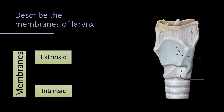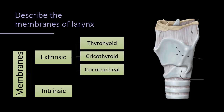Membranes of the larynx are of two varieties — extrinsic and intrinsic. Extrinsic membranes are seen outside. The thyrohyoid membrane is between the upper border of the thyroid cartilage and the hyoid bone. The cricothyroid membrane is between the thyroid and cricoid cartilages, blending with the conus elasticus inside. In the midline, the cricothyroid membrane makes a strong band known as the cricothyroid ligament. The cricotracheal membrane is between the lower border of the cricoid and the upper border of the first ring of the trachea.